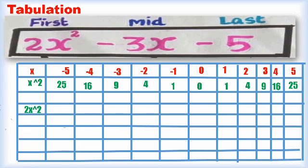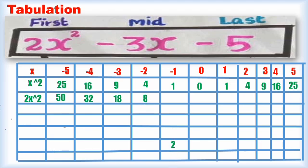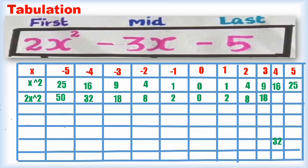Now I am going to find 2x². That is 2 into 25 equals 50. 2 into 16 equals 32. 2 into 9 equals 18. 2 into 4 equals 8. 2 into 1 equals 2. 2 into 0 equals 0. Then 1 into 2 equals 2. 4 into 2 equals 8. 9 into 2 equals 18. 16 into 2 equals 32. And the last one: 25 into 2 equals 50.